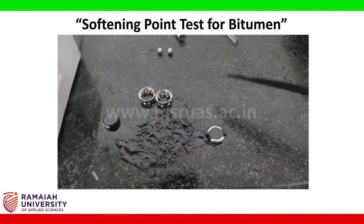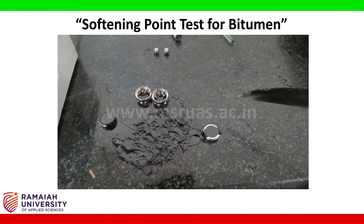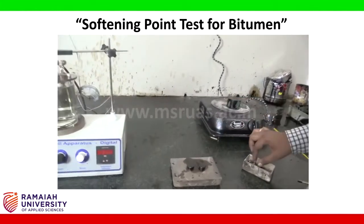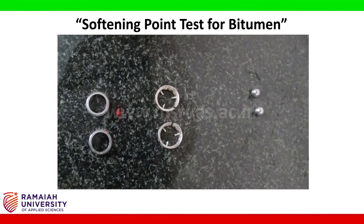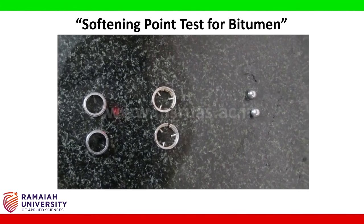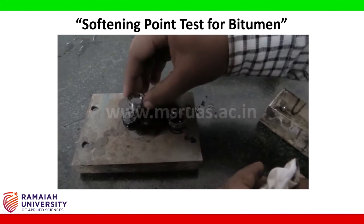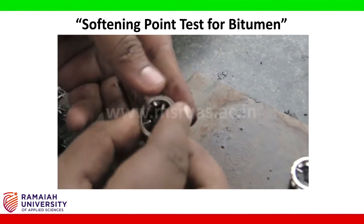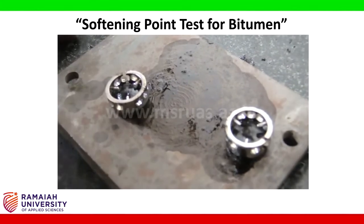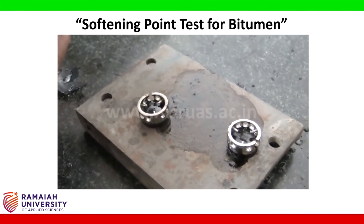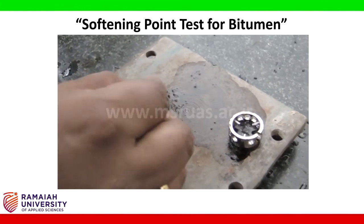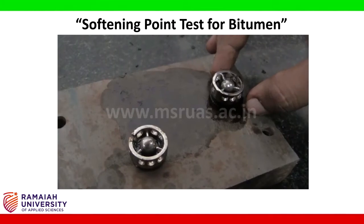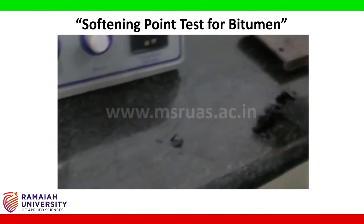Keeping the bitumen sample in air and water for 1 hour each is called conditioning of the sample. After conditioning, we place the rings on the frame. We place one ring and another ring on the second sample. Then we place the spherical steel balls on top of each ring with the bitumen sample. Both assemblies are then placed on the testing system.